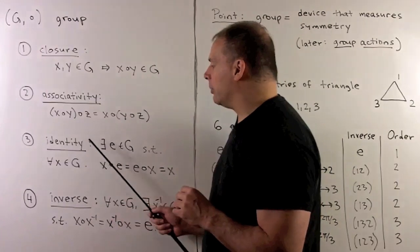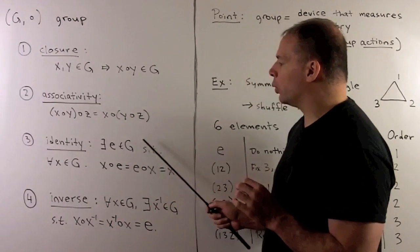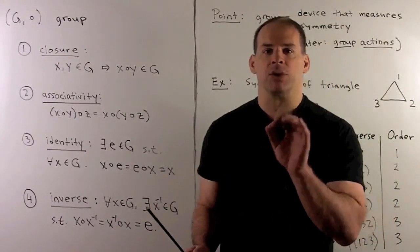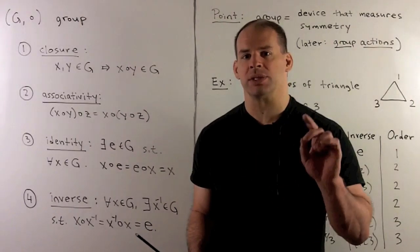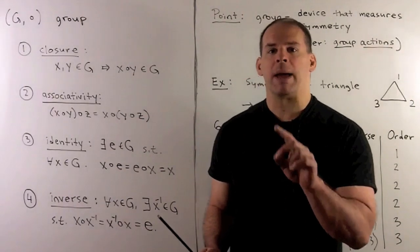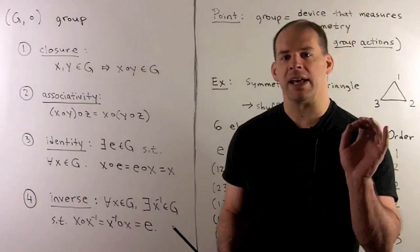Then, we'll have an identity element. This is going to be an element E in the group. If we take any X in the group, X times E equals E times X equals X. So if we multiply by E on either side, it has no effect.